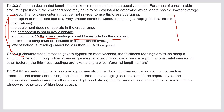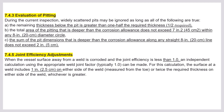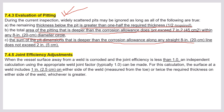Evaluation of pitting — this is a must question for the close-book exam. During the current inspection, widely scattered pits may be ignored as long as: the remaining thickness below the pits is greater than one half of the required thickness (0.5 × t_required); the total area of pitting deeper than the corrosion allowance does not exceed 7 in² (45 cm²) within any 8-inch diameter circle; or the sum of pit diameters deeper than the corrosion allowance along any straight line does not exceed 2 inches.